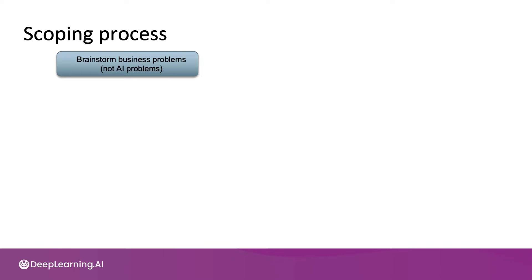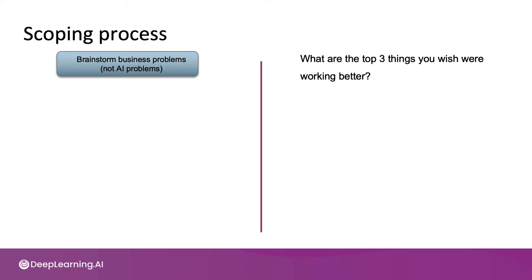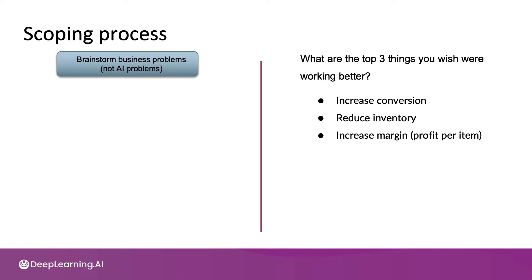So if I'm speaking with an e-commerce retail business, like the example from the previous video, I might ask: what are the top three things you wish were working better? And maybe they'll share business problems like they'd like to increase conversions — the number of people that go to the website and convert to a sale — or reduce inventory, so you don't need as much stuff sitting in the warehouse, or increase margin, the profit per item sold. At this point in the process, I'm not trying to identify an AI problem. I often tell my partners: I don't want to hear about your AI problems, I want to hear about your business problems. And then it's my job to work with you to see if there is an AI solution. And sometimes there isn't, and that's fine too.